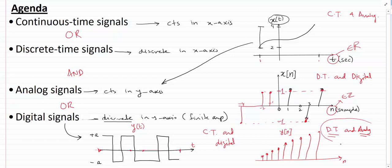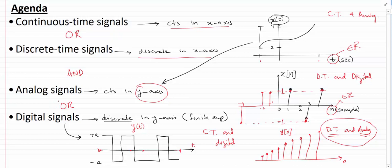So, a quick recap: continuous time signals are signals that are continuous in the x-axis, and discrete time signals are signals that are discrete in the x-axis, whereas analog and digital signals are continuous and discrete in the y-axis respectively. A signal must be either continuous time or discrete time, and either analog or digital. I hope this is clear — if you have any questions, just post them in the comment section below. Thank you.